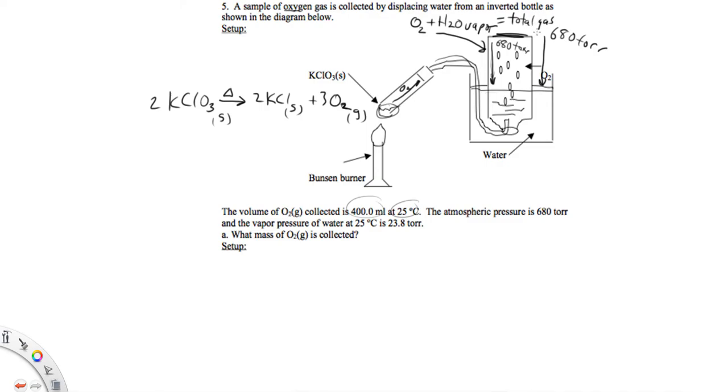It says what is the mass of oxygen gas that's collected. So we know we're going to use PV equals nRT, and the way to mass is through moles, so we want to solve for moles. So that's going to be n equals PV over RT.